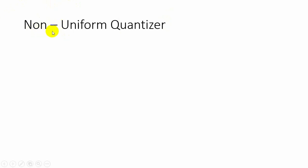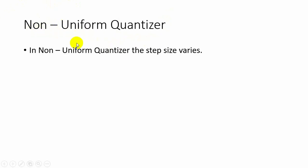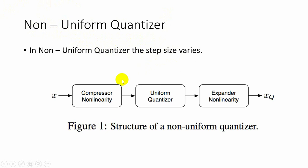In non-uniform quantization, the step size is not equal — it varies. The non-uniform quantizer works by passing the signal through a compressor, then the compressed signal through a uniform quantizer, and the output is then expanded, which provides the non-uniform quantization. The compressor operates based on either mu-law or A-law.